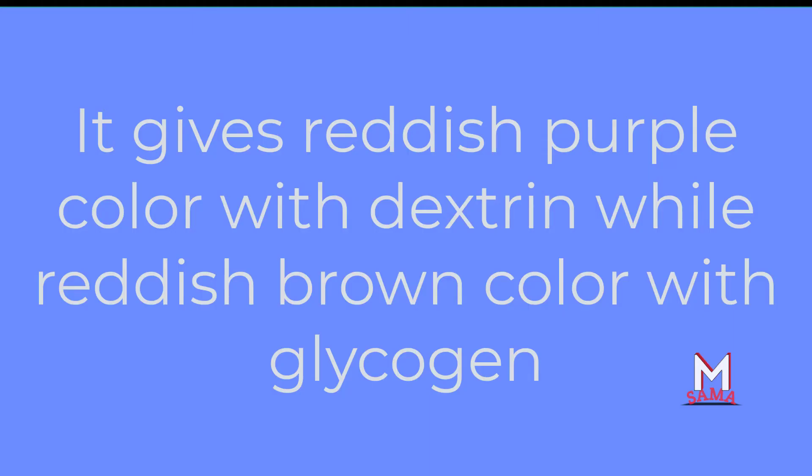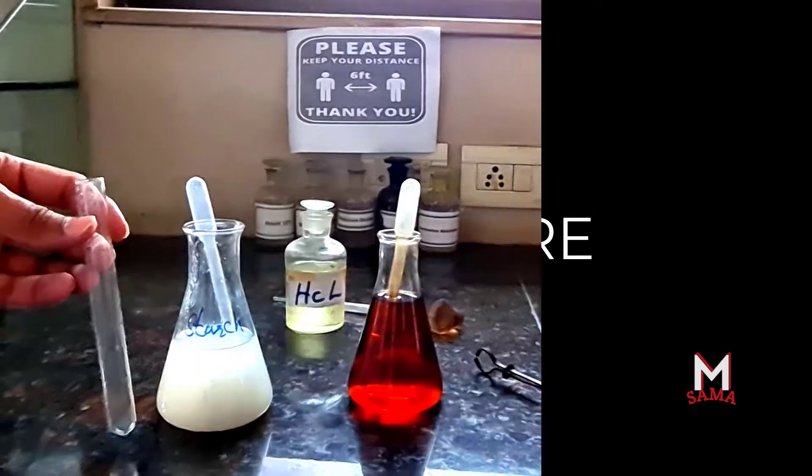Iodine gives a reddish purple color with dextrin and a reddish brown color with glycogen. So first, let's see the procedure of this test.